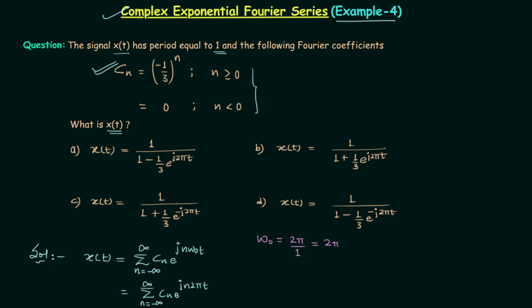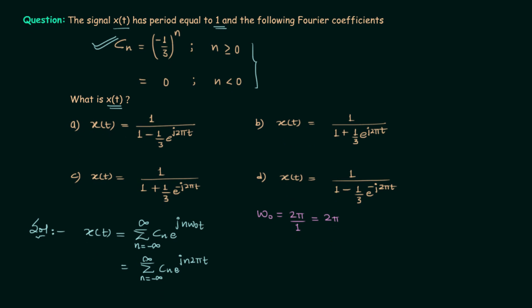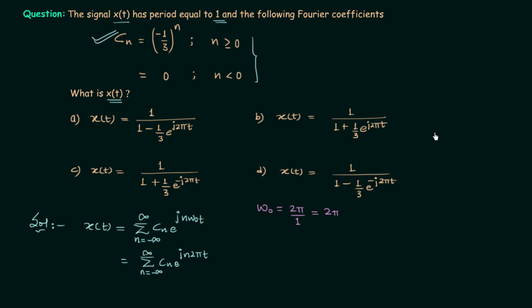Now if you see the problem, when n is less than 0 (negative), c_n is equal to 0. And when n is equal to 0 or positive, c_n is equal to minus 1 over 3 raised to the power n.